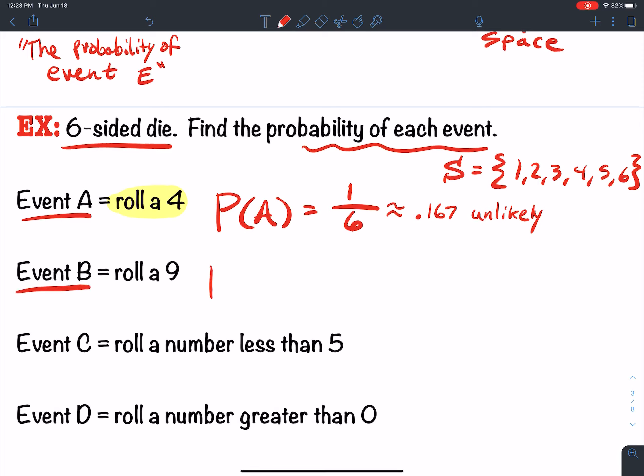Event B. Find the probability of event B, rolling a nine. How can I roll a nine if I have digits that are one through six? It is impossible to roll a nine. There are zero nines in my sample space. So zero out of six, which means that there's no chance. It's impossible.